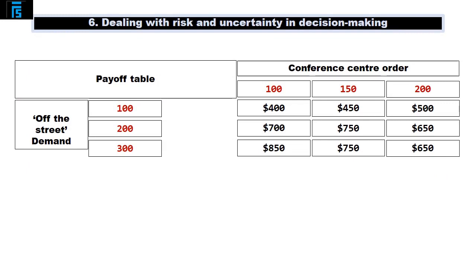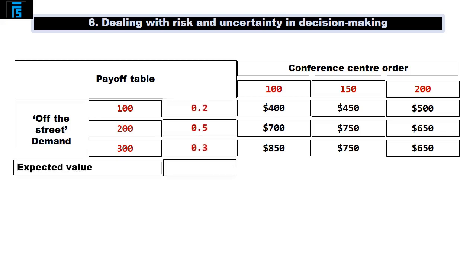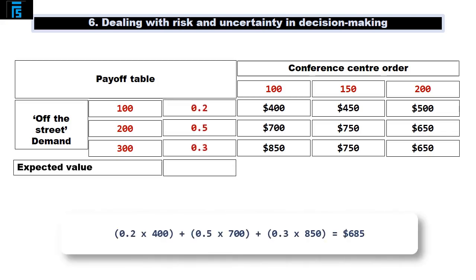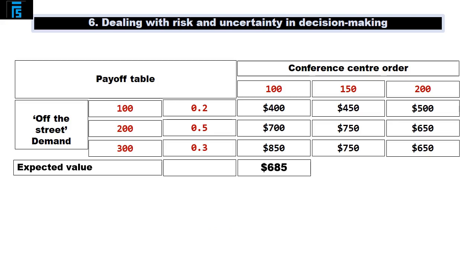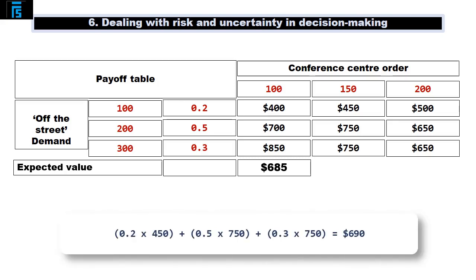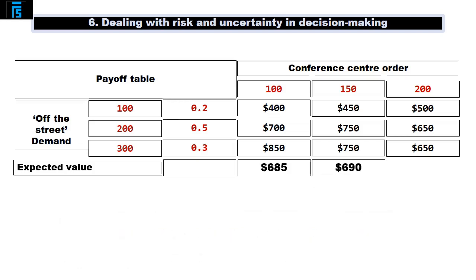If Jack signs up to supply 100 sandwiches to the conference centre, on average he can expect to earn a certain expected value. If Jack signs up to supply 150 sandwiches to the conference centre, on average he can expect to earn 0.2 × $450 plus 0.5 × $750 plus 0.3 × $750, which is $690.